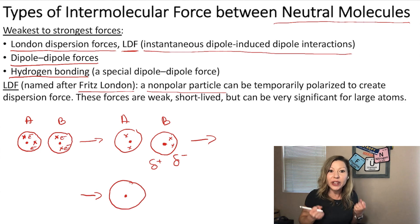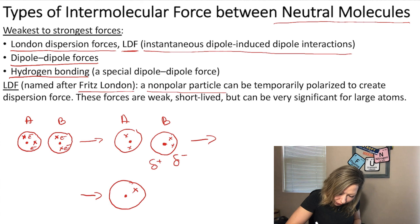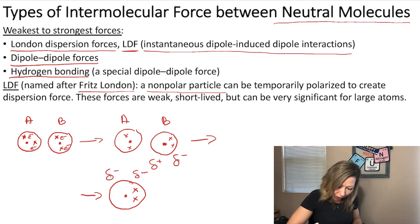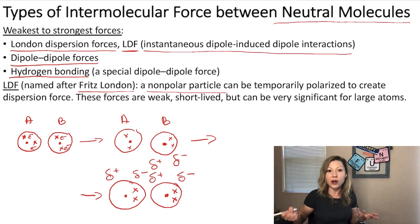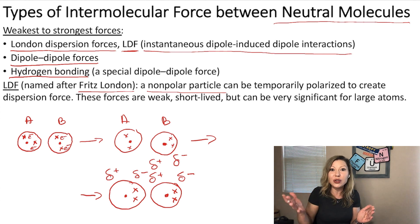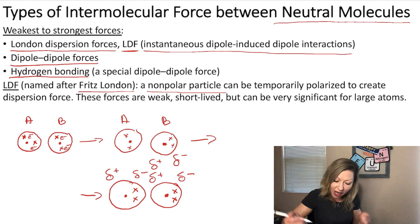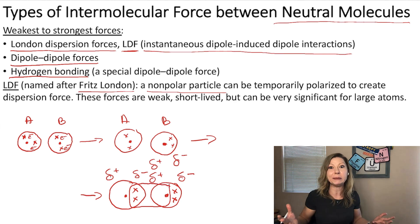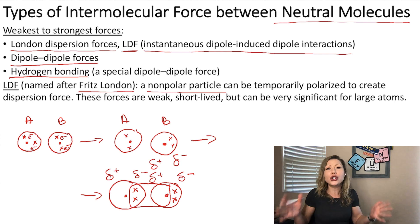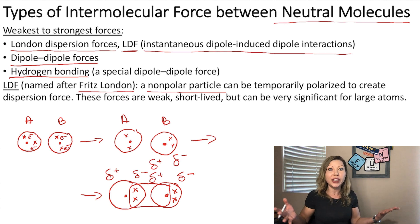In atom A, the electrons move to one side of the atom, creating a partial negative charge there, whereas on the other side we have a partial positive charge. In atom B, the two electrons are still on one side, with a partial negative charge there and a partial positive charge on the other side. So there is a weak electrostatic attraction between the nucleus of one atom and the electrons of the other atom. These forces are quite weak and short-lived since electrons move very quickly, but they can be very significant for large atoms.